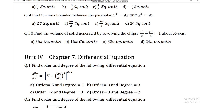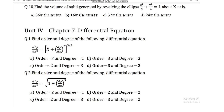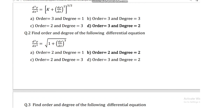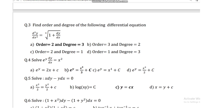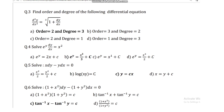Chapter 7 is differential equations. Question number 1: find the order and degree of the differential equation d³y/dx³ = (k + (dy/dx)²)^(3/2). Order is 3 and degree is 2. Question number 2: find the order and degree of d²y/dx² = under root of (1 + (dy/dx)³). Order is 2 and degree is 2. Question number 3: find the order and degree of d²y/dx² = cube root of (1 + dy/dx). Order is 2 and degree is 3.